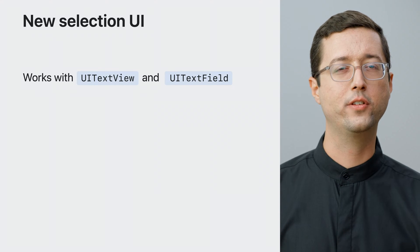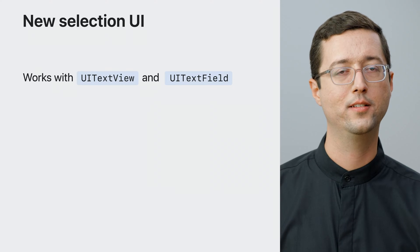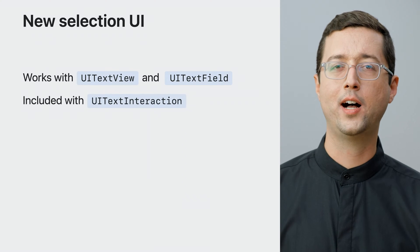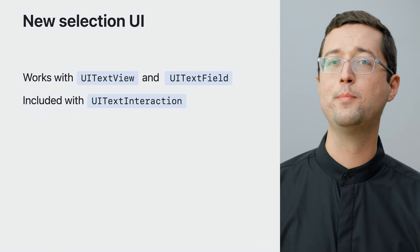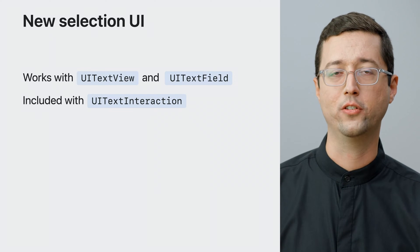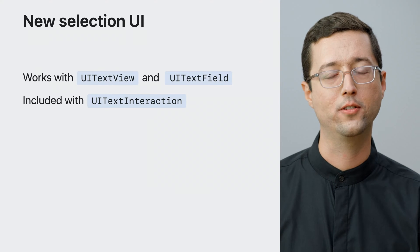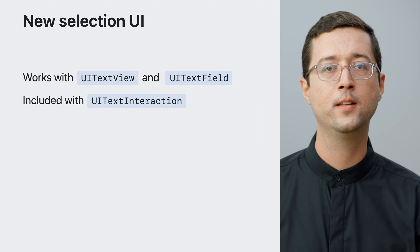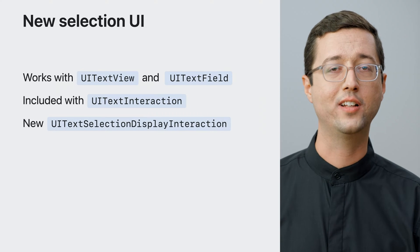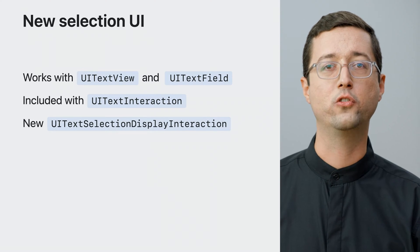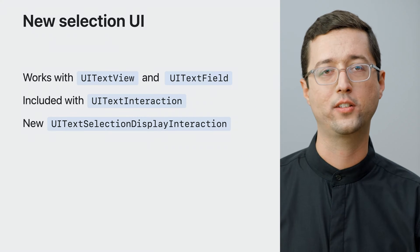Additionally, we made sure that clients of UI text interaction also get the new selection UI. However, if you have a highly customized UI for displaying text, it can be challenging to keep up with these changes in your own implementation, especially if you aren't able to adopt UI text interaction. That's why in iOS 17, we've added UI text selection display interaction.